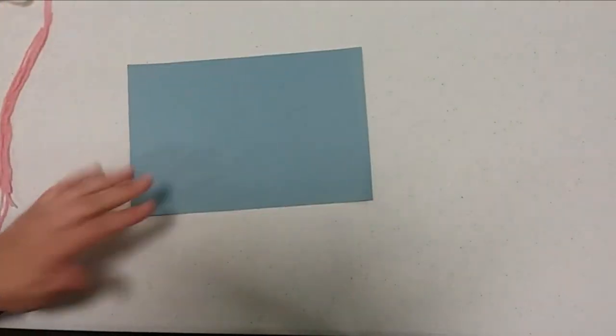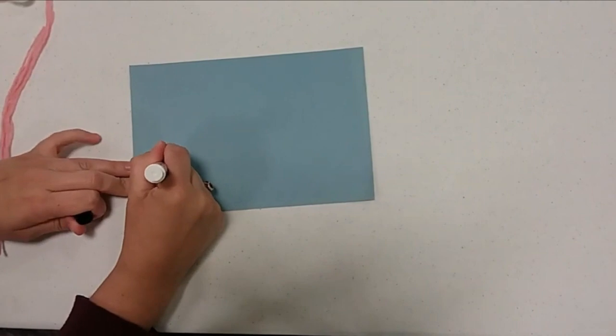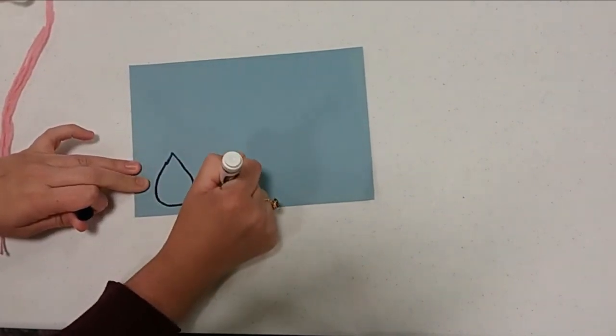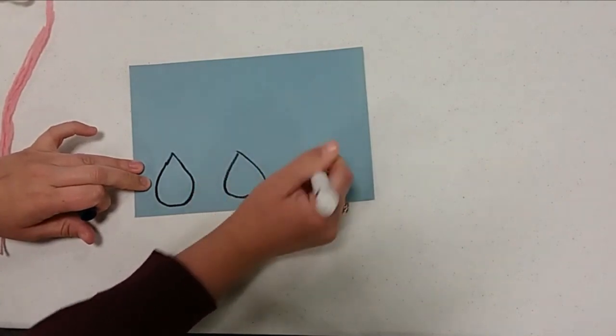So we're going to need five raindrops. What I'm going to do is take a marker and draw five raindrops on here, and after I draw them I'm going to cut them out.